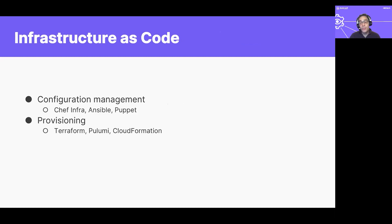Infrastructure as code is generally used to refer to configuring bare metal, virtual machines, and cloud instances all the way up through the applications running on the infrastructure. Provisioning is generally considered getting everything ready to run those machines, while configuration management is setting up the operating systems, deploying applications, and ensuring the continued enforcement of those policies. Applications generally have their own life cycles outside of infrastructure as code, so they'll have different SLIs and SLOs accordingly.